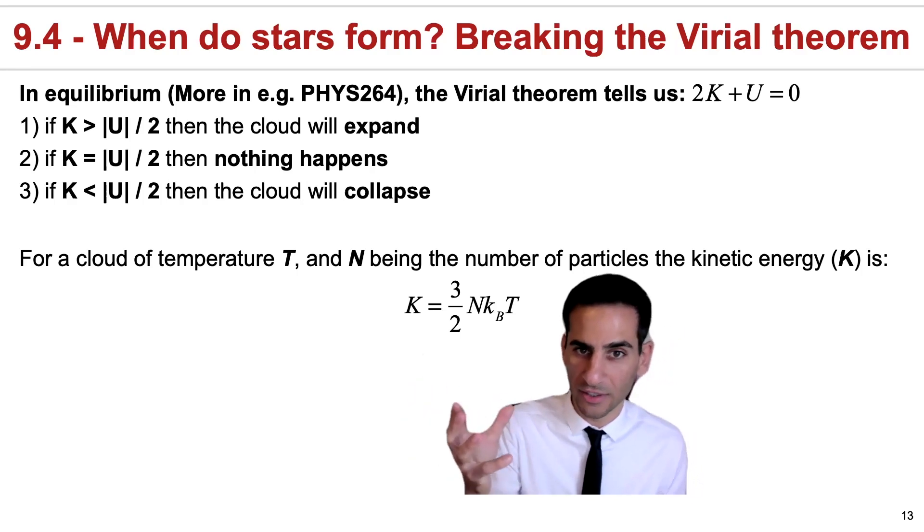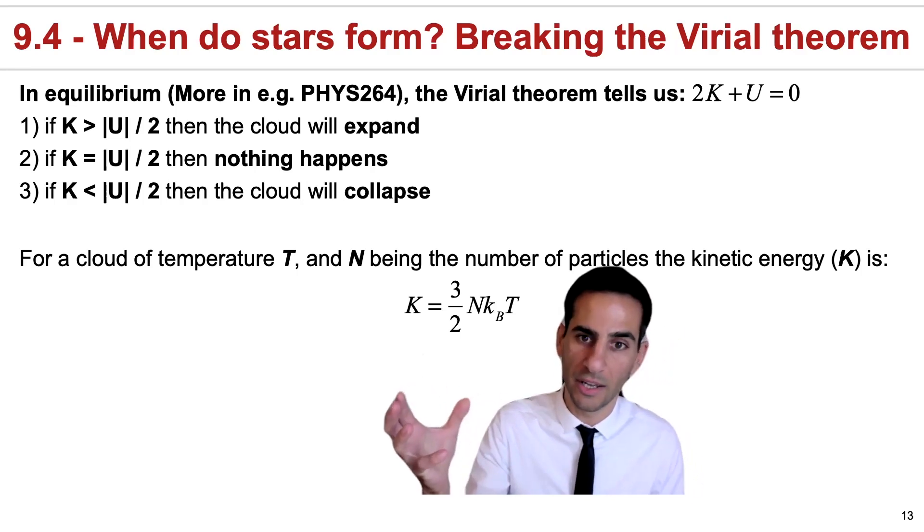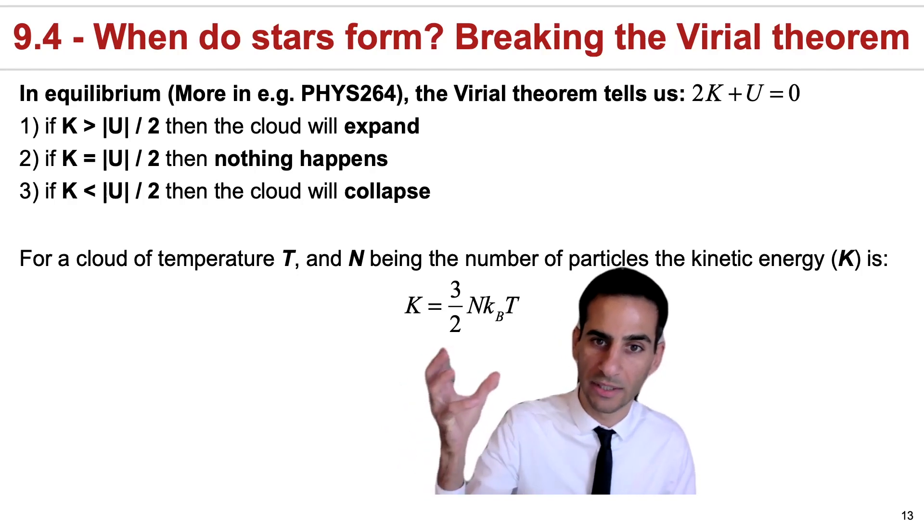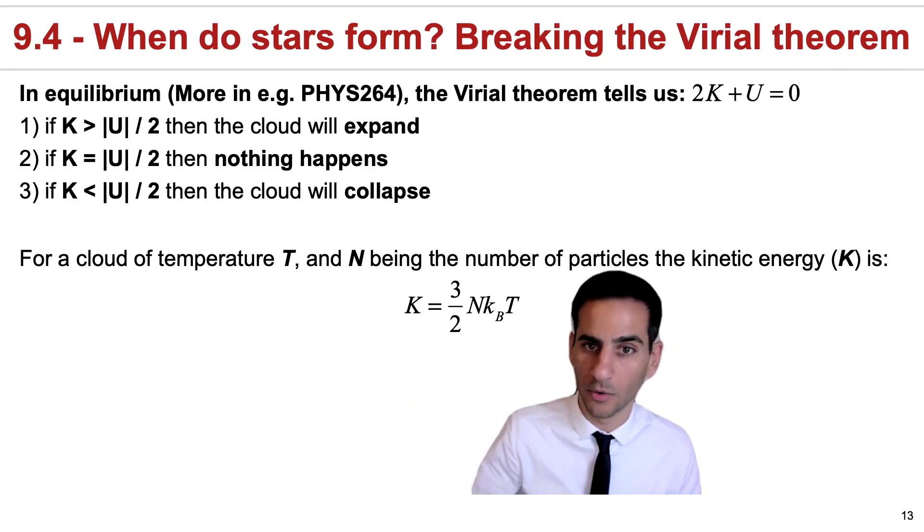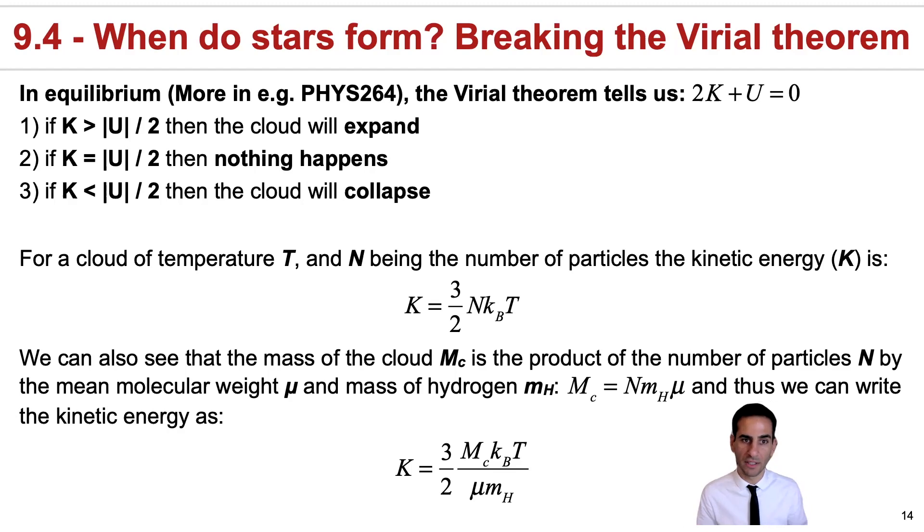Therefore, if you have a cloud that's really hot, it will have a very high kinetic energy. If it is very cold, then the kinetic energy will be much lower. Now, the other thing we can see is that the mass of the cloud, M_c in this case, can be essentially written as a product of the number of particles N that we're considering by the mean molecular weight and the mass of hydrogen. And this means we can write the mass of the cloud with this very simple equation.